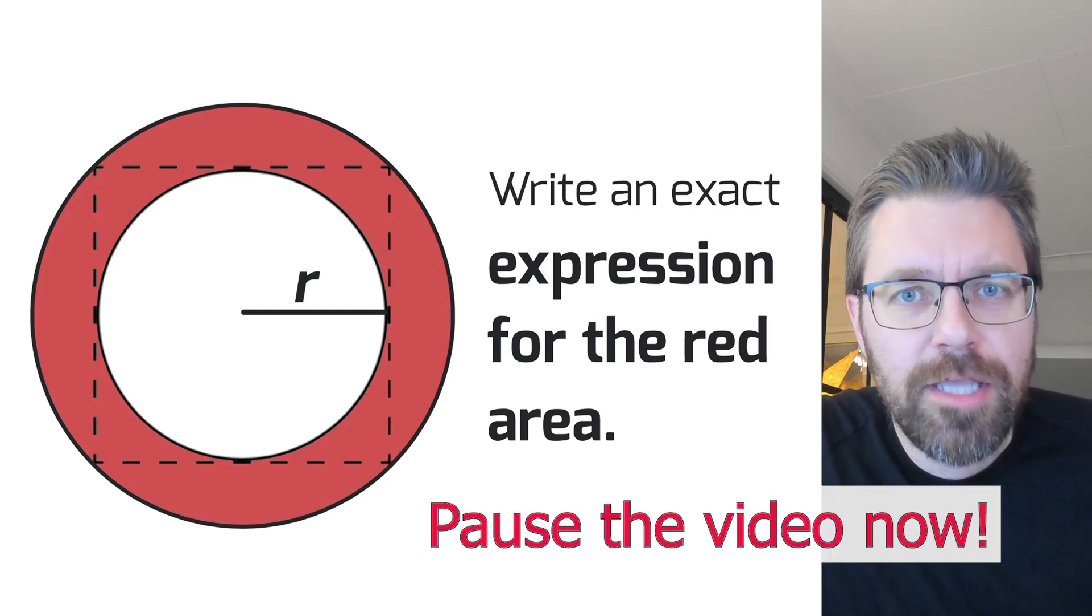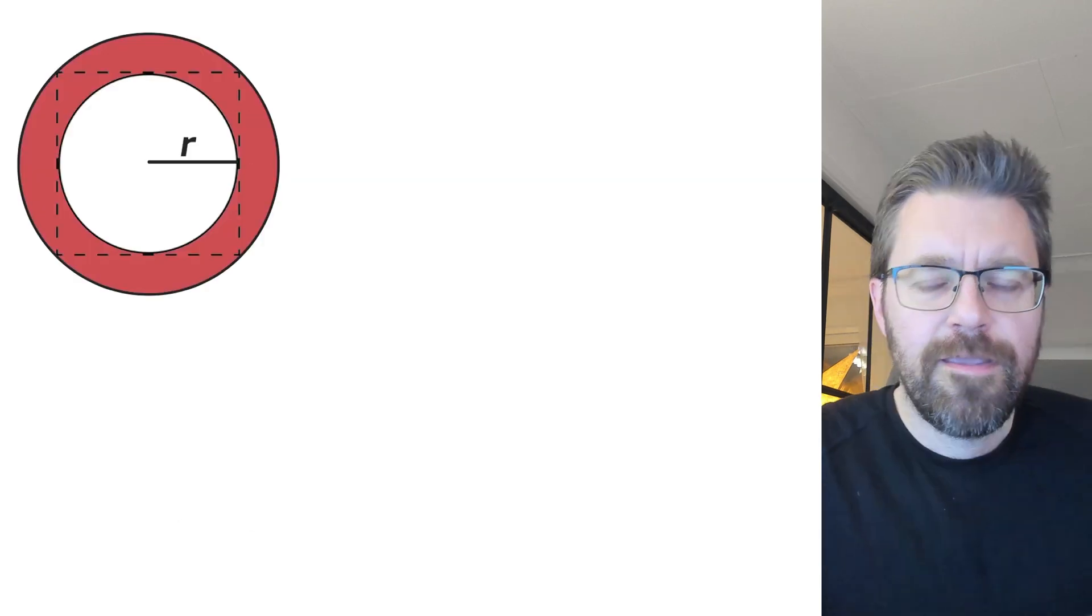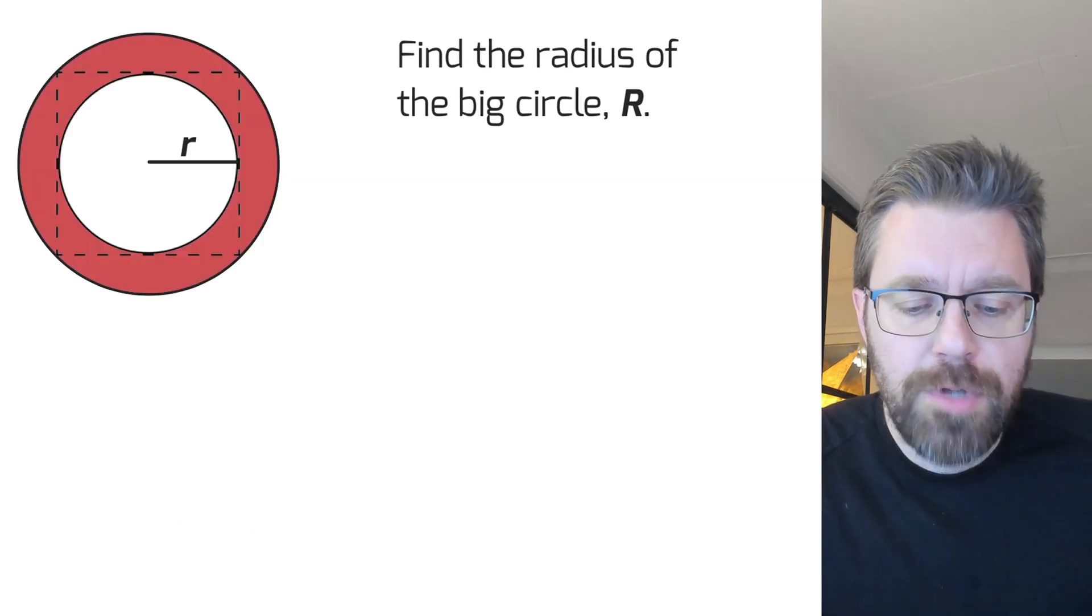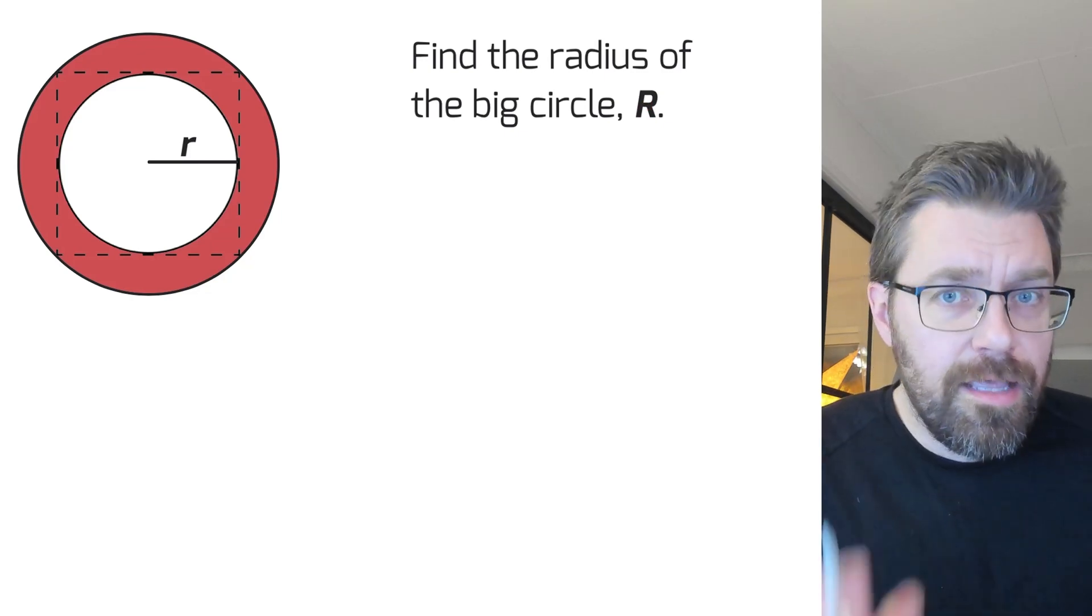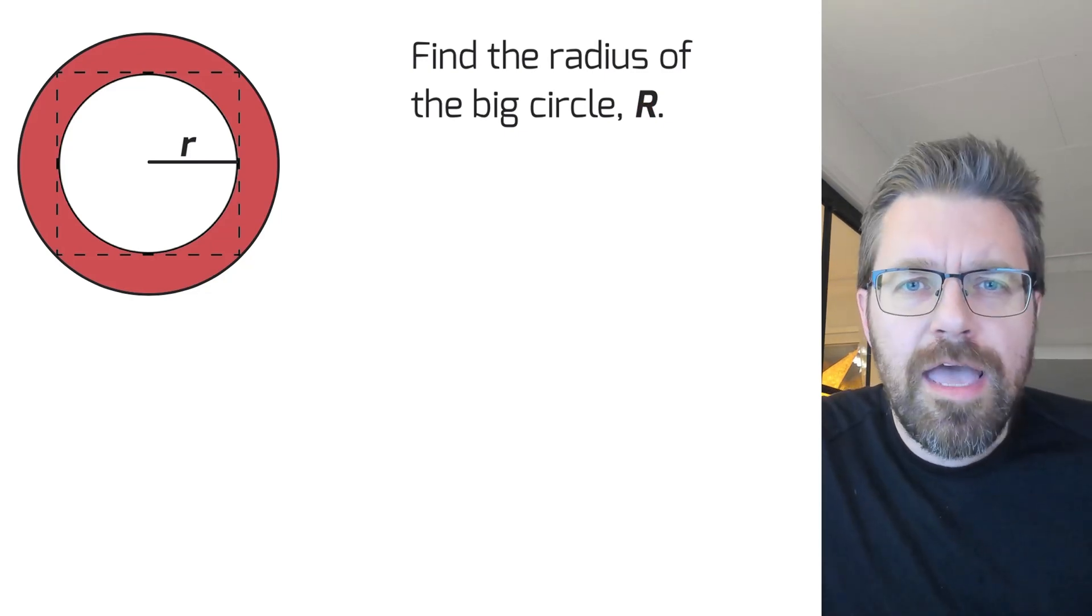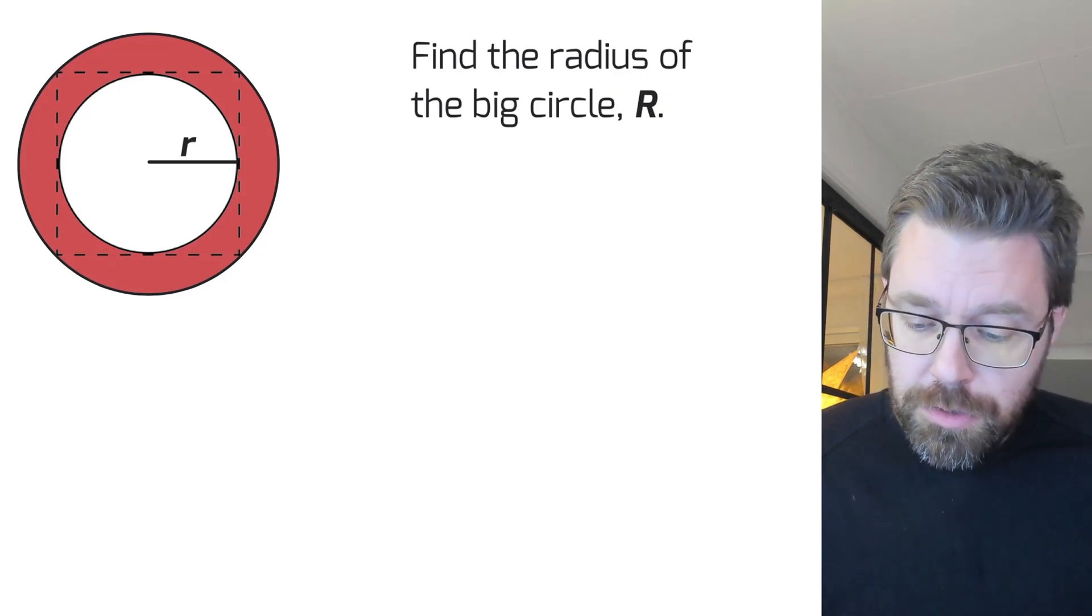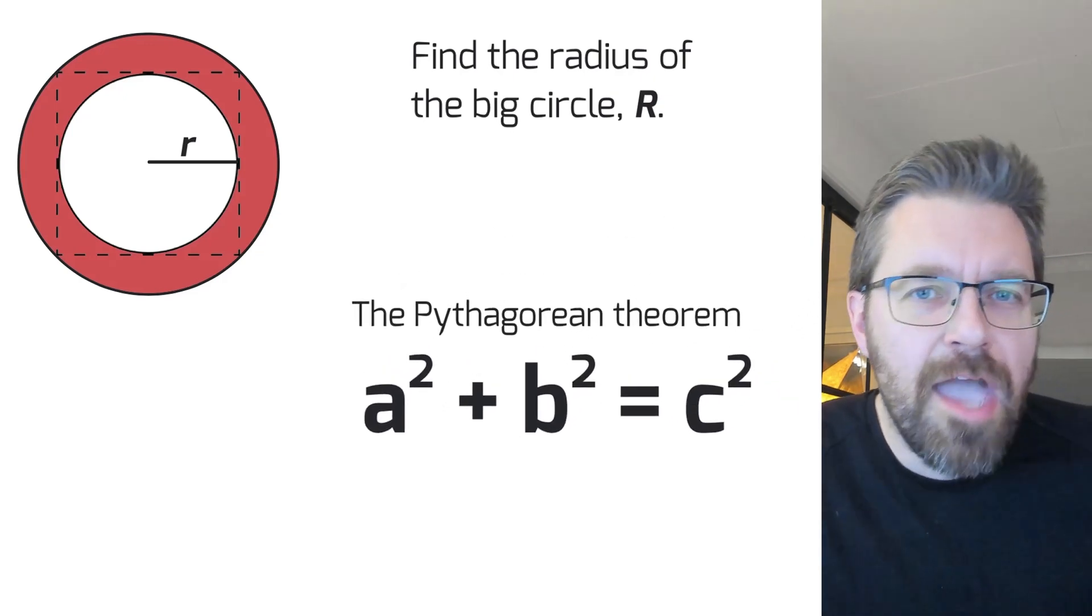The first thing we're going to do is find the radius of the big circle. I write it like a big R, and to do it we need to use this little guy, the Pythagorean theorem.